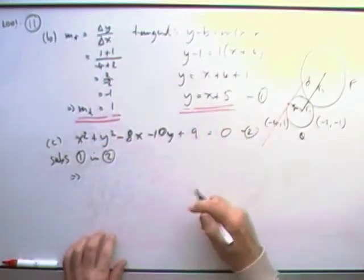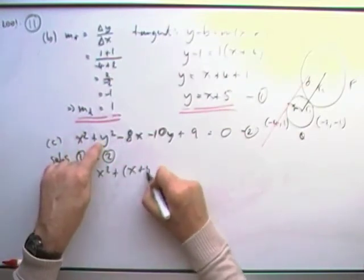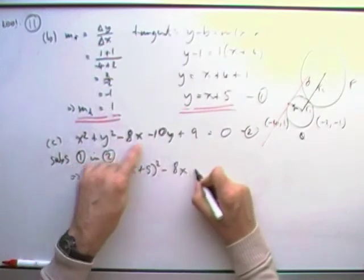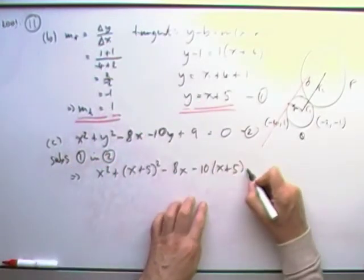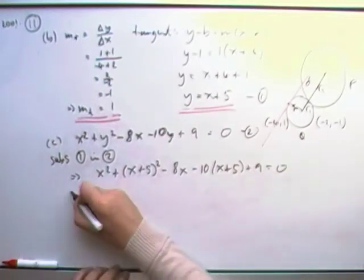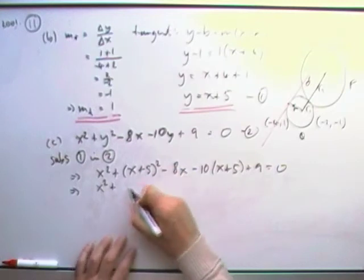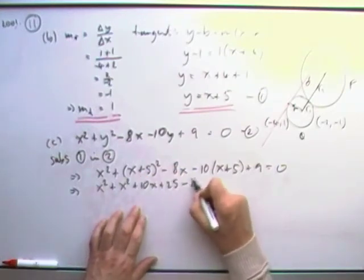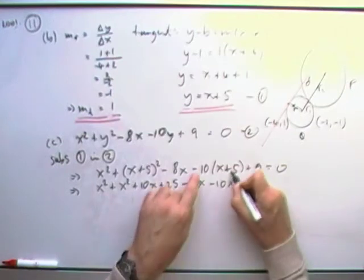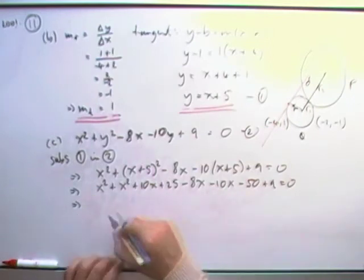So what I'm going to do is I'm going to substitute this line I just had into the circle 2. So wherever you see y, you write x plus 5. So I've got x squared plus y, x plus 5. Minus 8x minus 10 times y, x plus 5. Plus 9 equals 0. Multiply it out. Gather up to a quadratic. x squared. Square a bracket. Square a bracket. Square the first. Twice the product. Square the last. Minus 10 times that bracket. Don't forget negative that one as well. Minus 50 plus 9 equals 0. Tied it all up.